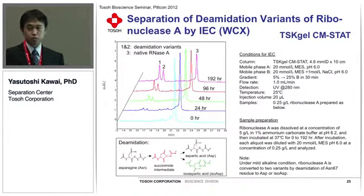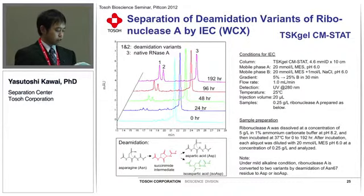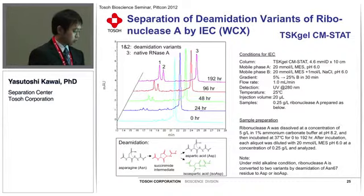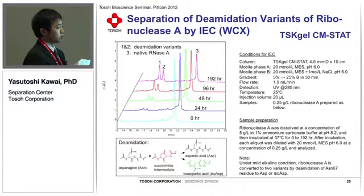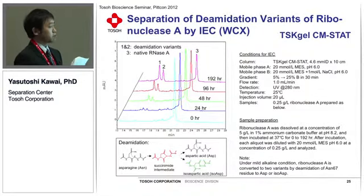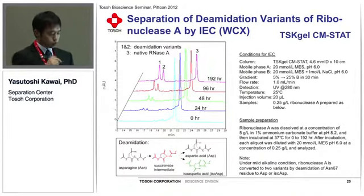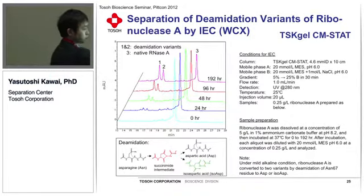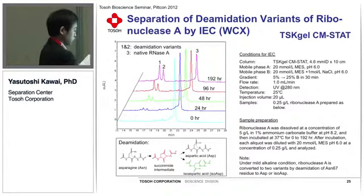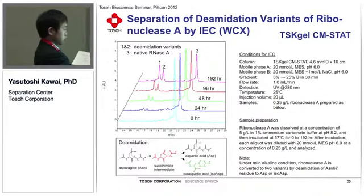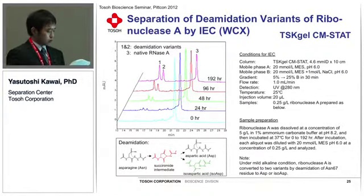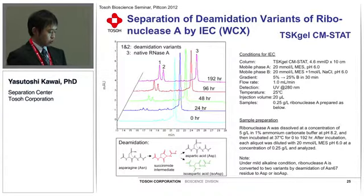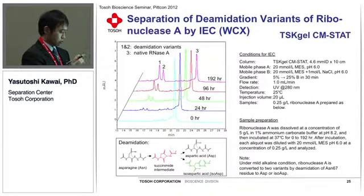I'd like to show another example of IEC separation. This figure illustrates the time course of isomerization of ribonuclease A under alkaline conditions, analyzed by CMSTAT column. As the isomerization proceeded, the intact form — peak number three — decreased, and two peaks corresponding to deamidation variants — peaks one and two — increased. Aspartic acid and isoaspartic acid are negatively charged, whereas asparagine is electrically neutral. Therefore, the deamidation variants are eluted earlier than the intact form.